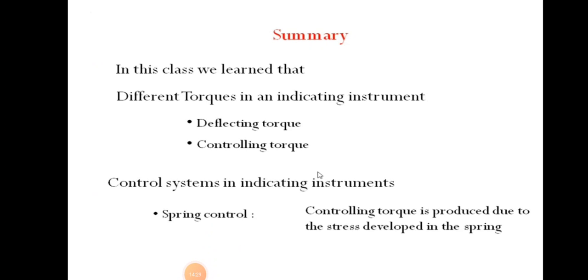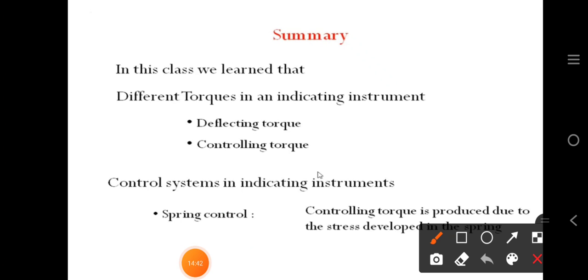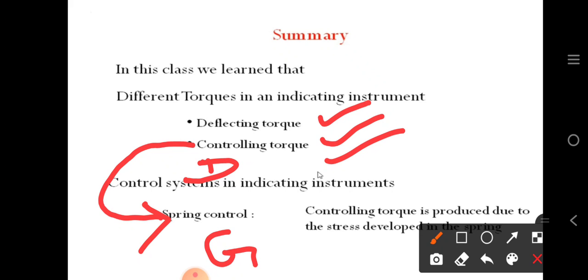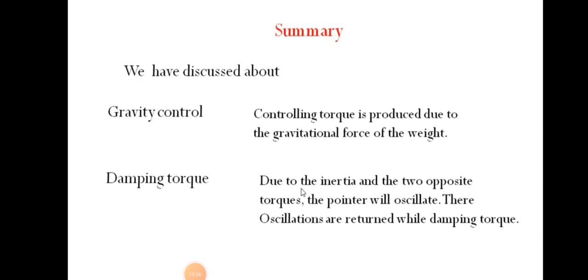So, to summarize what we have studied: in previous lectures we covered deflecting torque and controlling torque, and today we studied damping torque. We have now learned all three types of torques — deflecting, controlling, and damping. Controlling torque uses spring control and gravity control. Today's lecture covered damping torque and the different techniques to induce it: air friction, fluid friction, and eddy current damping. This is the end of today's video lecture. See you with a new topic in the next video. Thank you, keep studying.